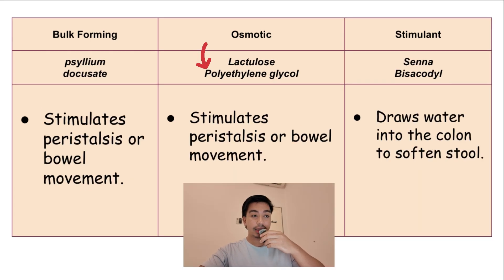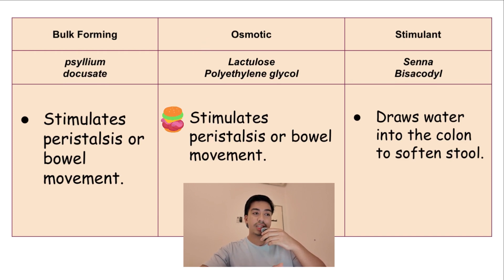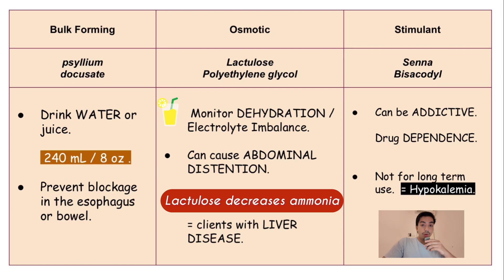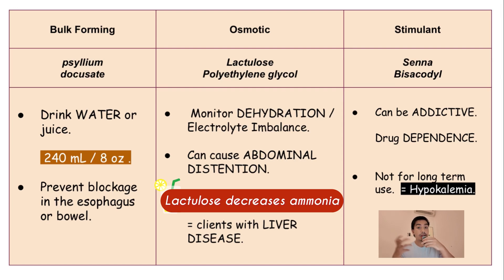Next, we have osmotic laxatives. Examples are lactulose and polyethylene glycol. Their function is to stimulate peristalsis or bowel movement, just like bulk-forming. We have to monitor for dehydration or electrolyte imbalance, and also monitor for abdominal distension. We must also check ammonia levels in the body. A correction: lactulose actually decreases ammonia levels in the body, which is why we recommend it for patients with liver diseases to lower ammonia levels.